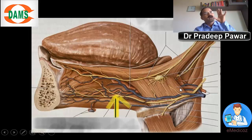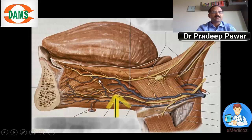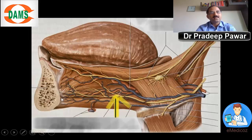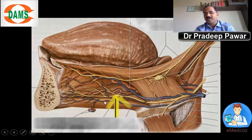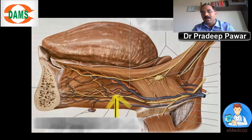Deep to the hyoglossus muscle lie the glossopharyngeal nerve and the lingual artery — that is why hyoglossus is called the key muscle of the oral region. The hypoglossal nerve lies on the genioglossus muscle, which is the safety muscle of the tongue. The genioglossus arises from the superior genial tubercle and goes to the tongue. The hypoglossal nerve breaks up into small branches and supplies all the muscles of the tongue except the palatoglossus.